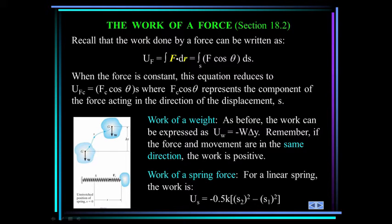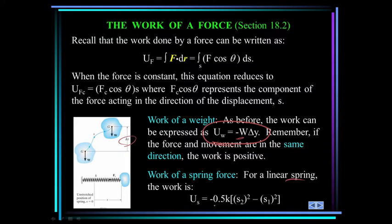The work of a weight is defined as minus W times delta Y. If delta Y is positive, then it takes work to move that body up, therefore the work is negative. The work of a spring force for a linear spring is minus one-half K times (s2 squared minus s1 squared), where K is the spring constant. Make sure you measure these values from the unstretched length of the spring, and don't forget that minus sign.